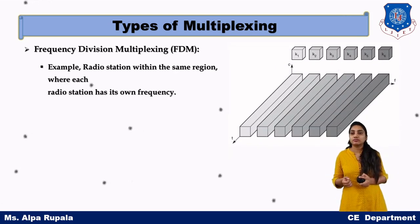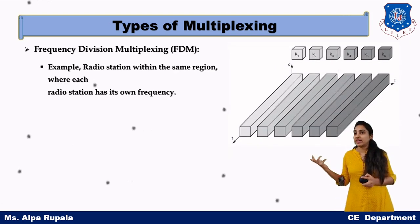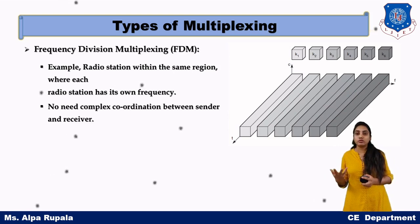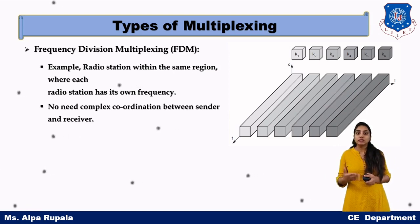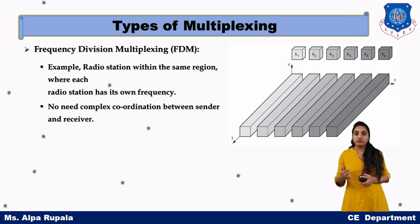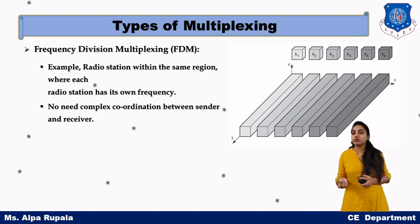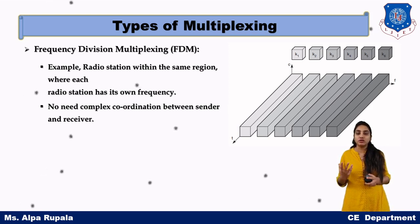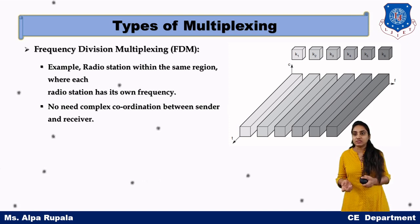An example of FDM is radio stations. Since the bandwidth or frequency is available for a particular user 24/7, we do not need any synchronization or coordination mechanism.